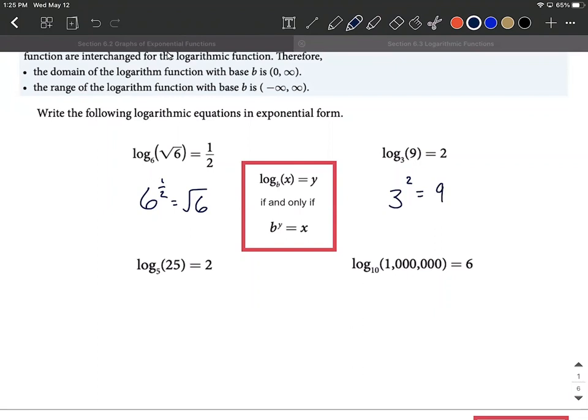Log base five of 25 equals two. We'll say five's our base. Line that up first. That looks like five to the 25th power, so can't use that for our exponent. We'll use the two for our exponent—it's going to equal 25.